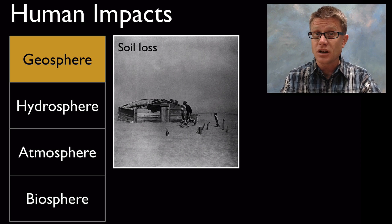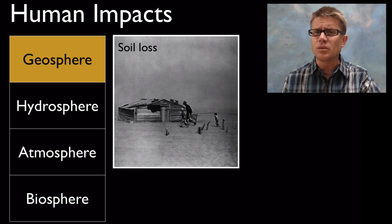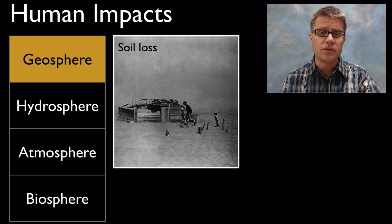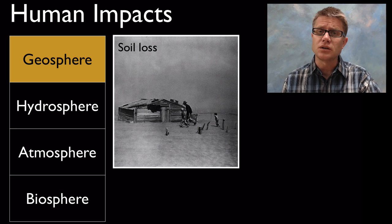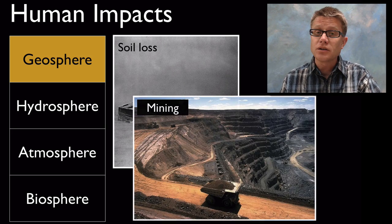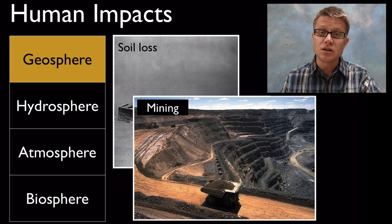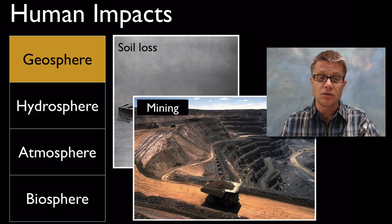We're impacting the Earth itself — the geosphere. Agriculture is incredibly important to us; it's how we grow our food. But if we're not taking care of the soil we can get soil loss. If we're not rotating our crops we can see soil loss like we saw during the Dust Bowl. Also as we're mining and digging up the metals and minerals that we need, we're changing the surface of the planet, and it just doesn't come back on its own.